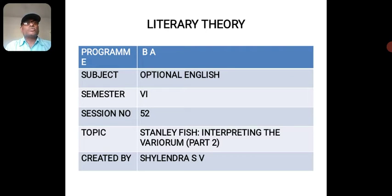It is a video class for Final Year B.A. Optional English, Literary Theory, Sixth Semester, Session Number 52, Topic: Stanley Fish, Interpreting the Variorum, Part 2.